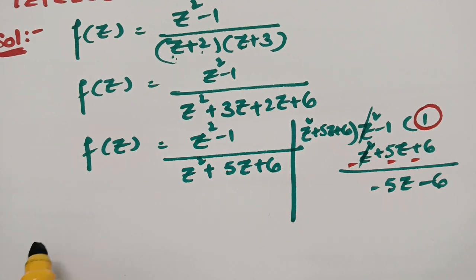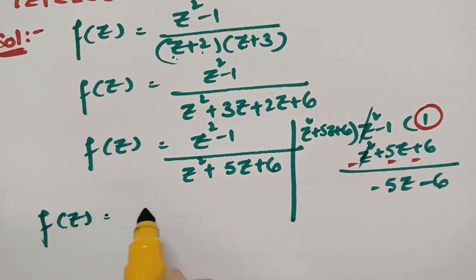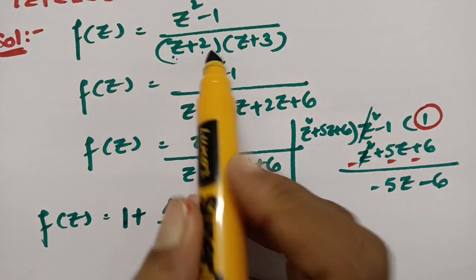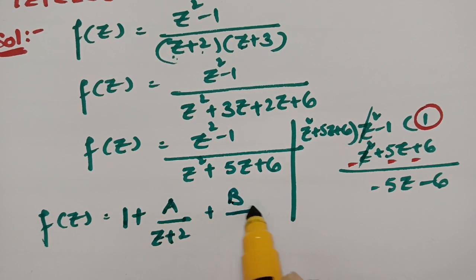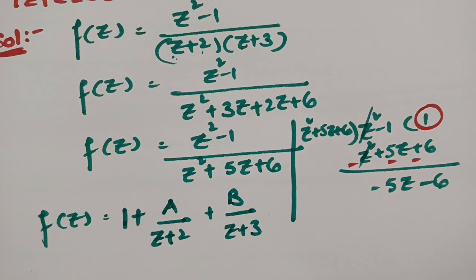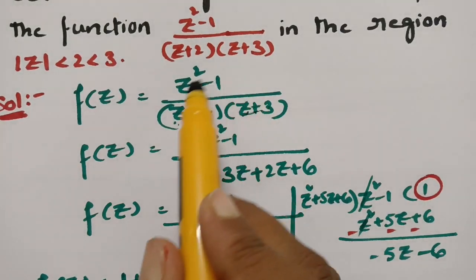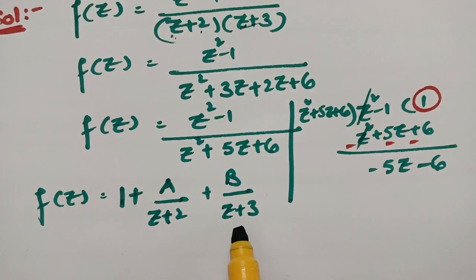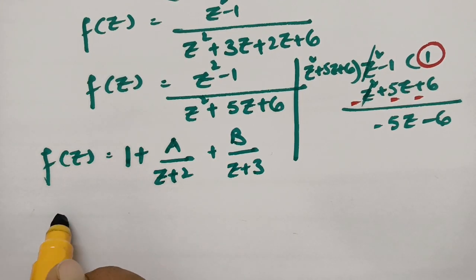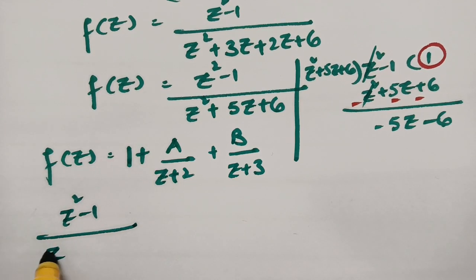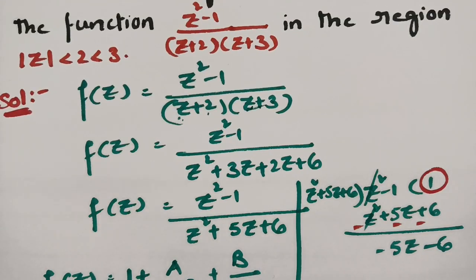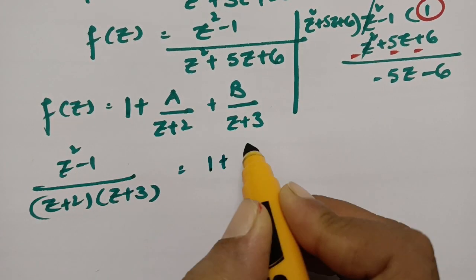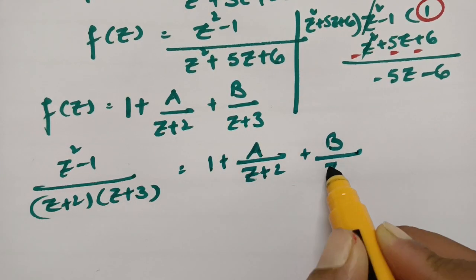In order to balance this, f(z) can be written after resolving into partial fractions as 1 + A/(z+2) + B/(z+3). So after making the division in order to resolve into partial fractions, it divides one time, giving f(z) = 1 + A/(z+2) + B/(z+3).